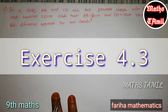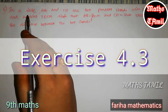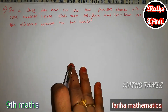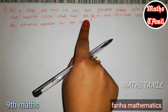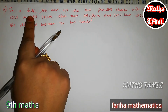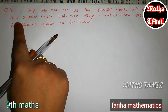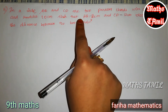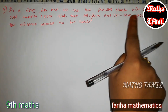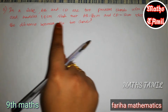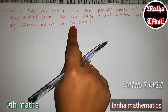Hi friends, we are in the Fariha Mathematics channel. 9th standard maths, exercise 4.3, question 5. In a circle, AB and CD are two parallel chords with center O and radius 10 centimeters, such that AB is equal to 16 centimeters and CD is equal to 12 centimeters. Determine the distance between the two chords.